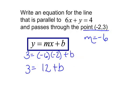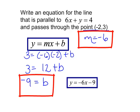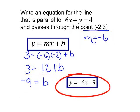To solve for b, subtract 12 from each side. I have found b, but I'm not done. You need to write the equation of the line. Well, we have the slope as negative 6, we have b as negative 9. Our answer is y equals negative 6x minus 9.